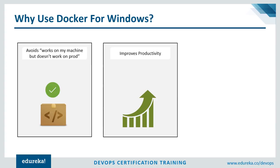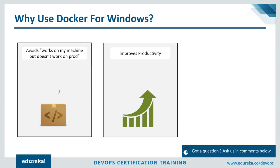Because of the difference in software versions between the development and testing server, the application will fail. But with Docker, we can run our application within a container which contains all the dependencies of the application, and the container can be run throughout the software development cycle, providing a consistent environment. Apart from that, it also improves productivity. By installing Docker on Windows, we're running Docker natively. Docker containers originally supported only Linux operating systems, but later Docker made its platform available for other operating systems, though Linux was still the middleman running inside a virtual machine.